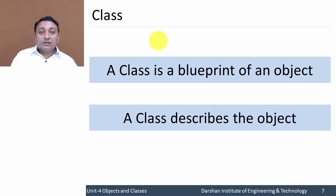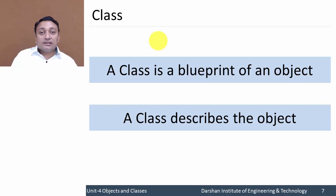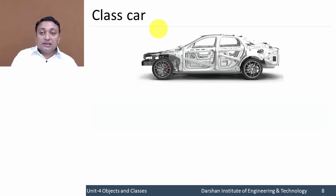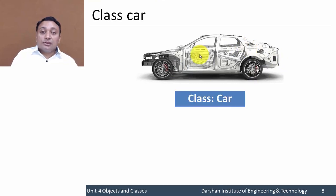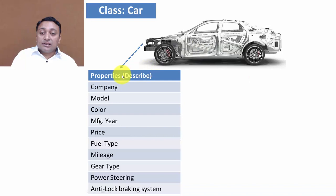Attributes for those student objects would be roll number, and they are all learning C++ subject. Let us discuss class in detail. Suppose we have class 'car' — here we have a skeleton of that car. Attributes would be company, model, color, manufacturing year, gear, and many more features.